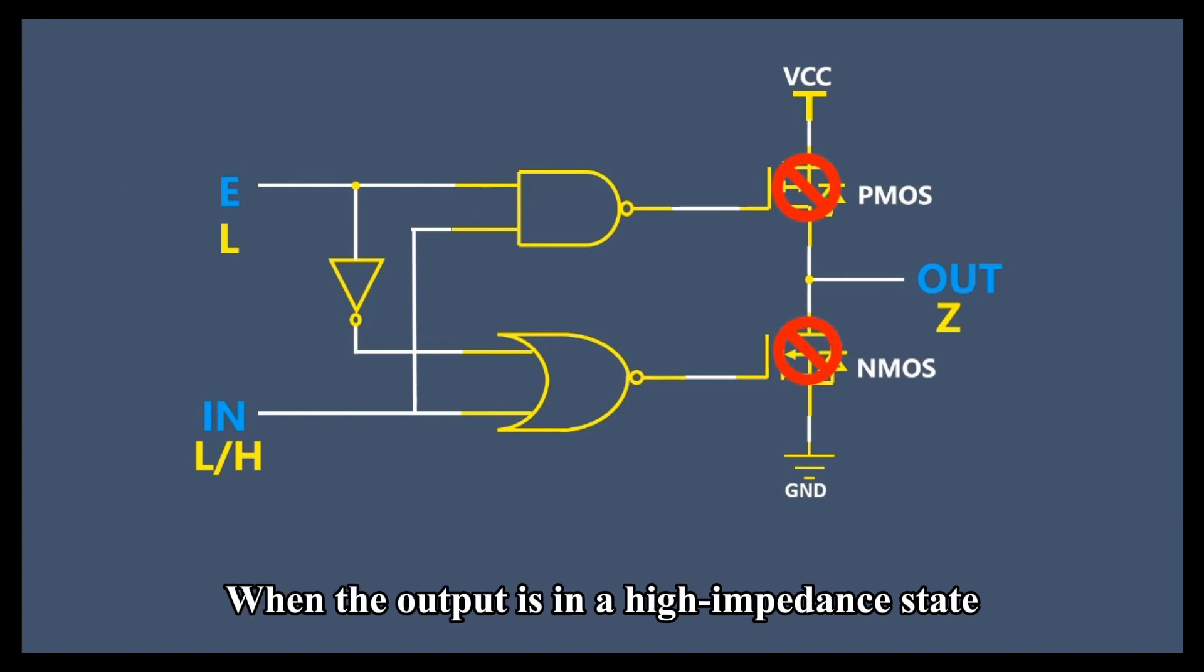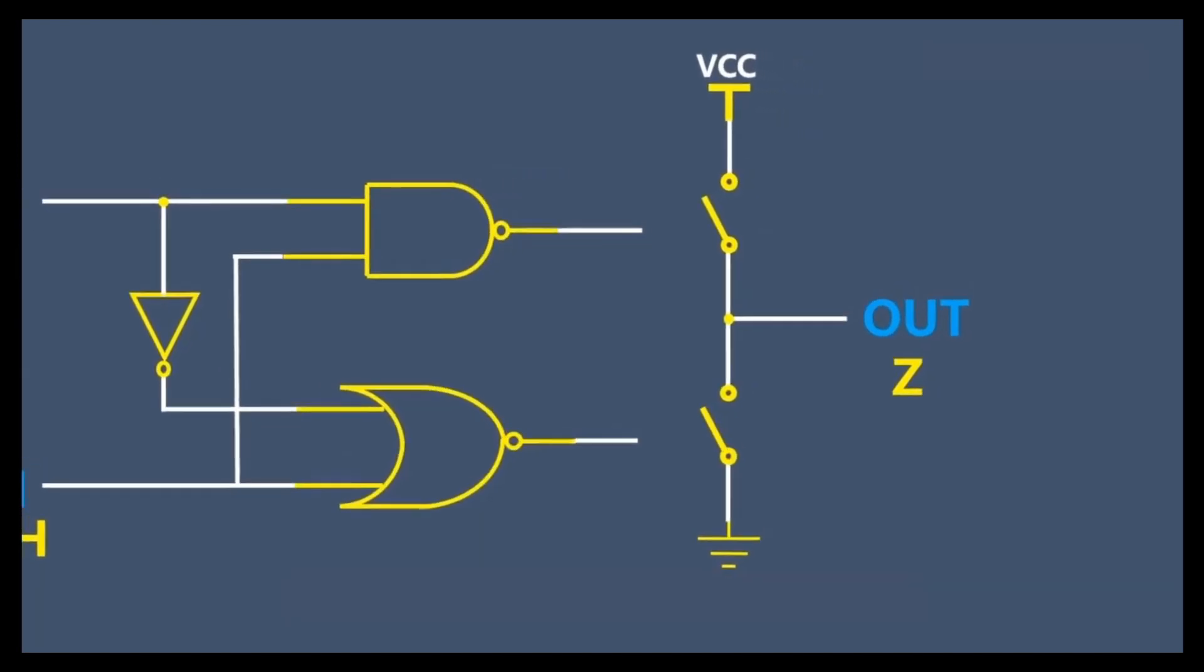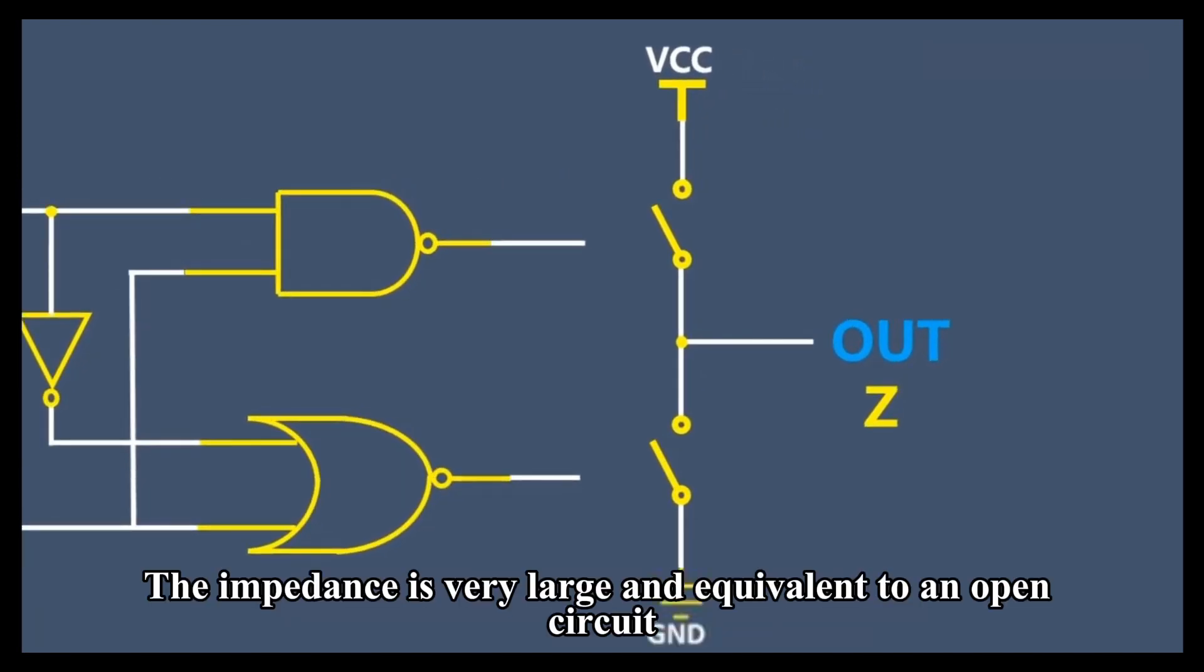When the output is in a high-impedance state, it is neither a high level nor a low level. The impedance is very large and equivalent to an open circuit.